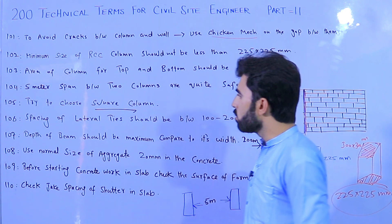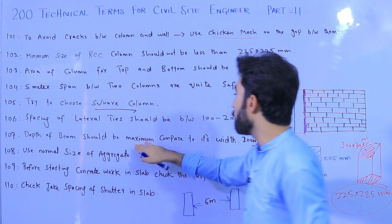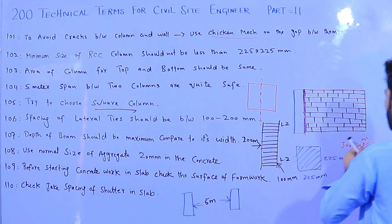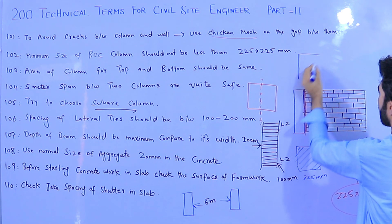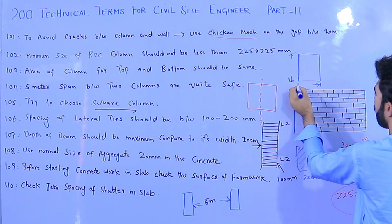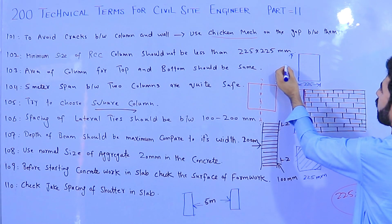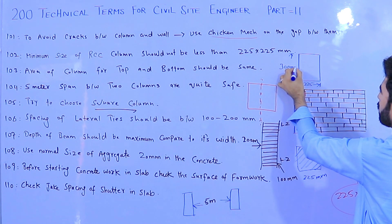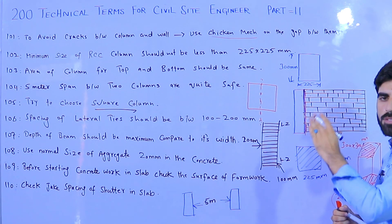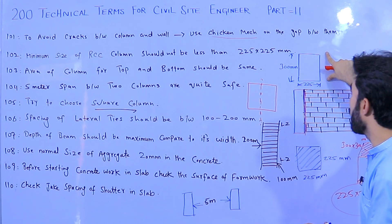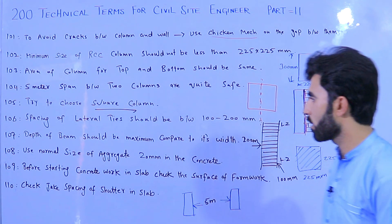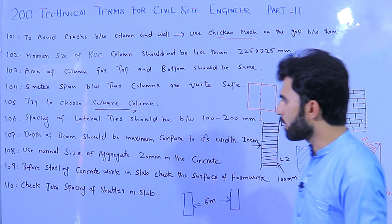Term 107: The depth of a beam should be maximum compared to its width. For example, if the width is 225mm, the depth should be 300mm. If the width is 300mm, the depth should be 400 to 450mm. The depth should always be greater than the width. This is per IS 456:2000 reference.